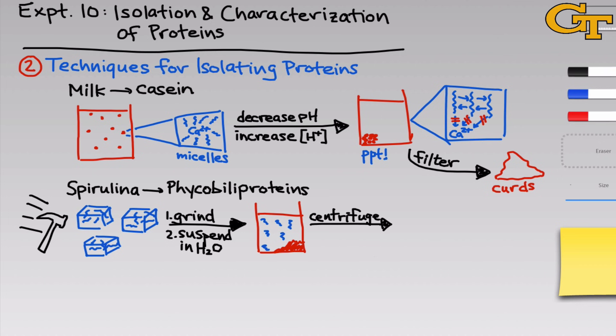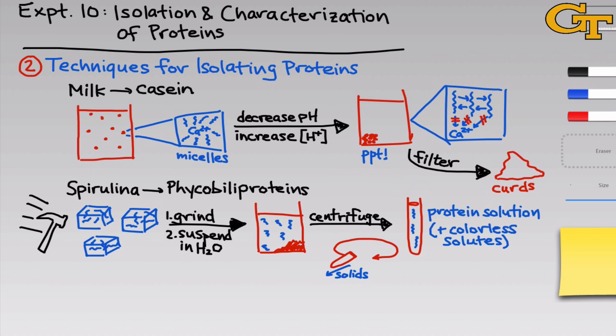We're going to use a technique common in biochemistry to separate solids from liquids called centrifugation. The basic idea is simple: if you've ever ridden a carnival ride that spins you rapidly, you know there's a force that pushes you outward. The centrifuge relies on this — it spins angled test tubes very rapidly so that solids get pushed to the bottom of the test tube while the liquid solutions stay where they are. A pellet develops at the bottom, and we can simply pour off the liquid on top to be left with the protein solution.